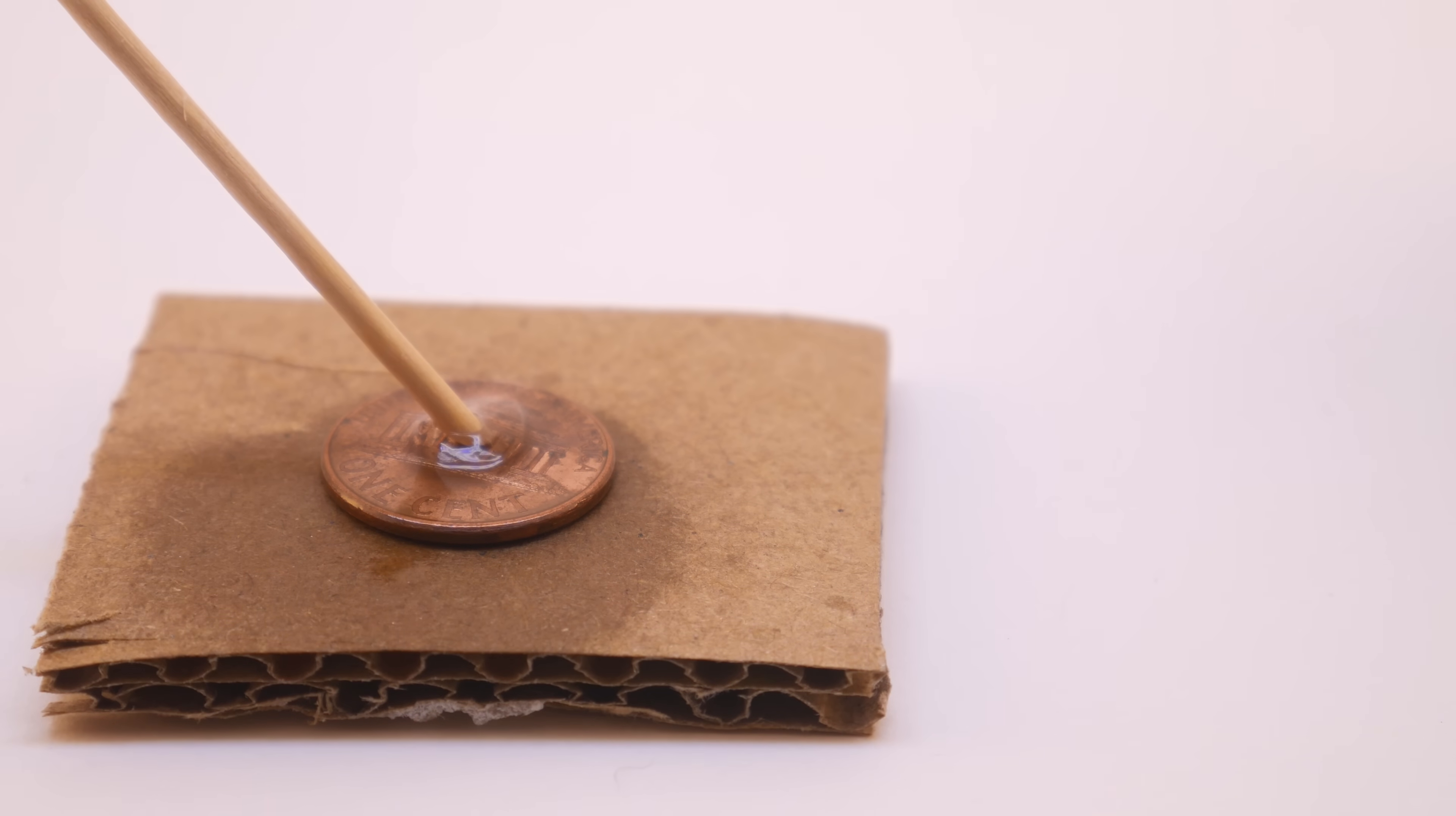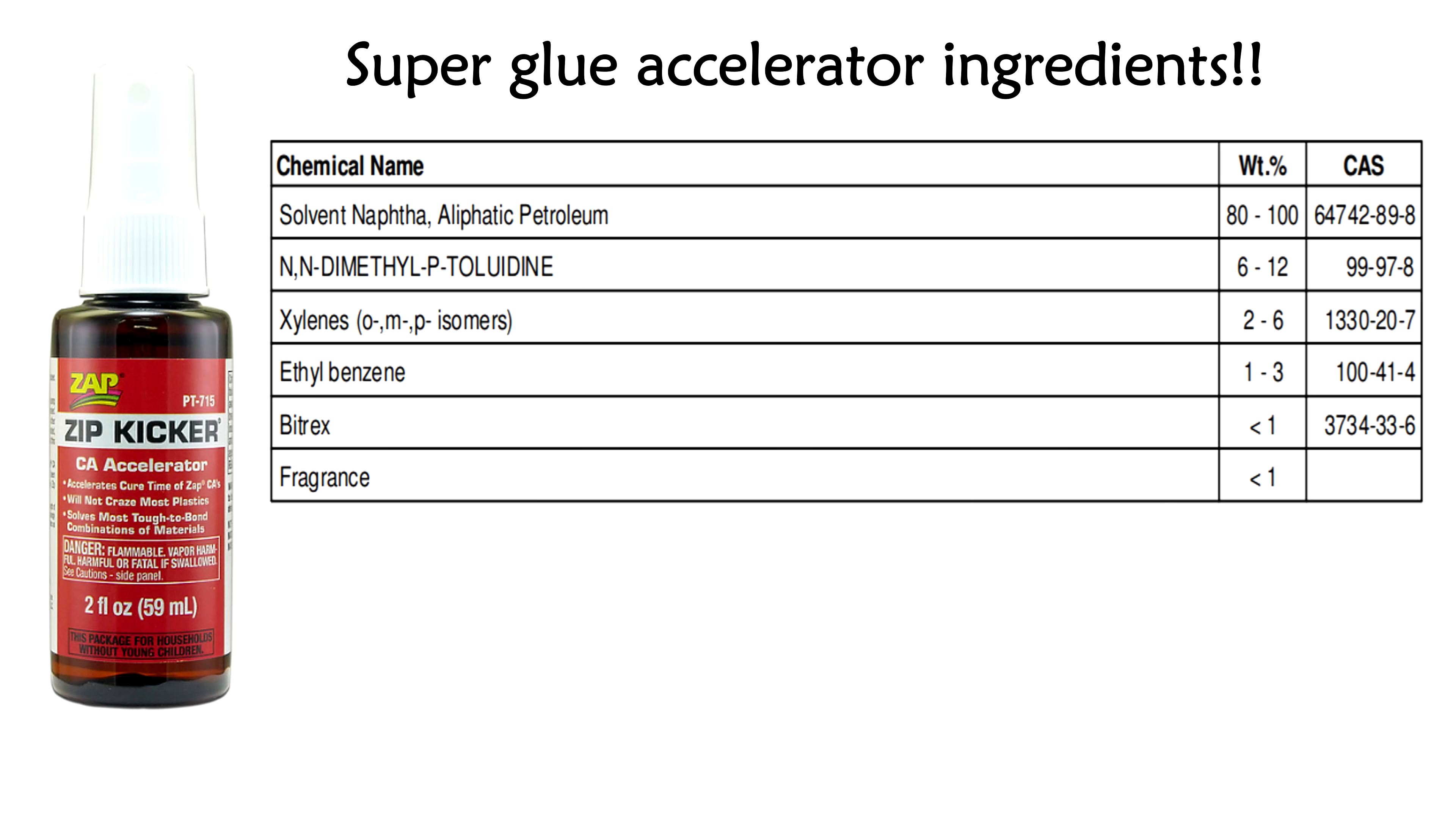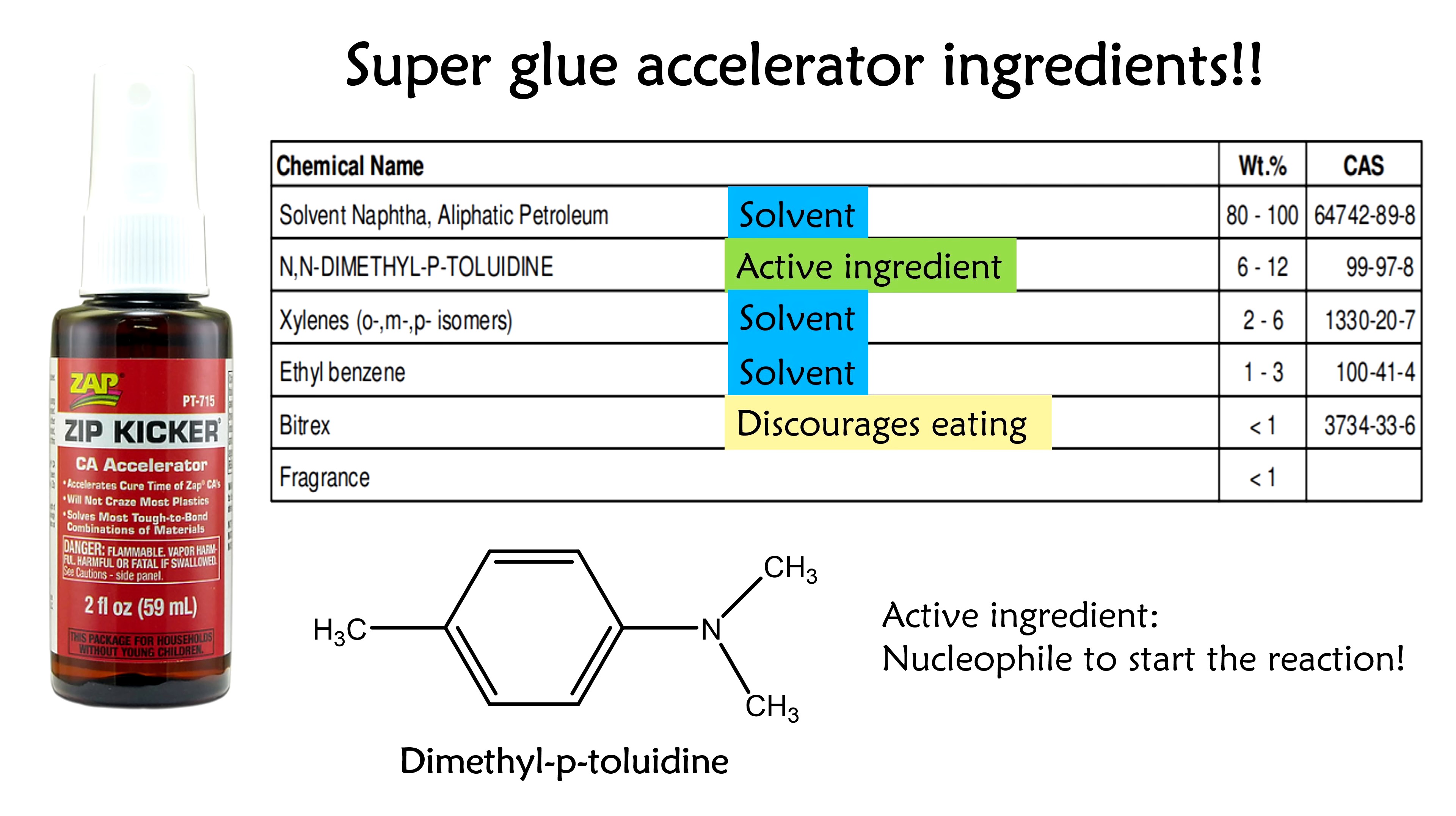So how does this work? Looking at the SDS sheets, we can see that accelerators have a lot of ingredients. The main ingredients are actually solvents, and the active ingredient is only a few percent. This molecule is a weak base and a weak nucleophile, which can initiate the polymerization of ethyl cyanoacrylate.